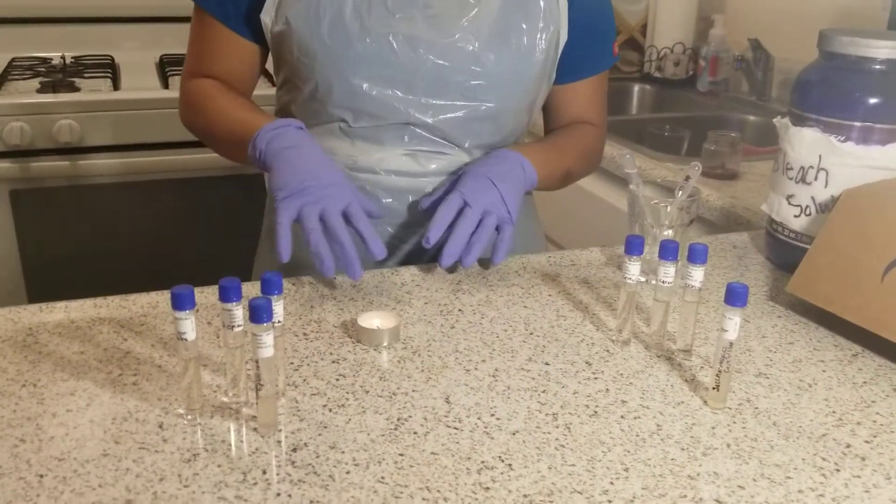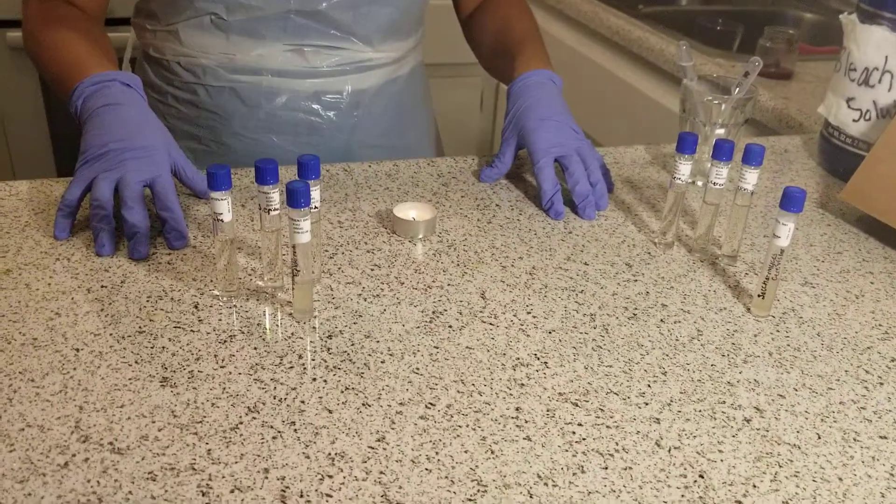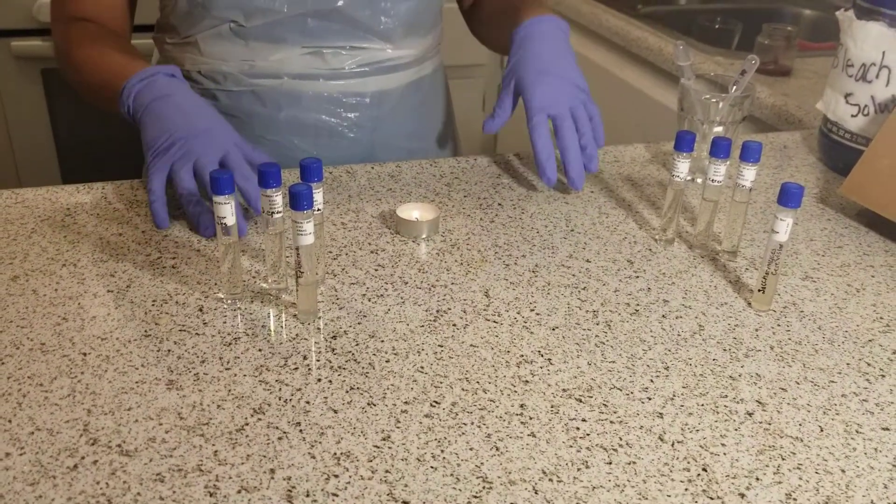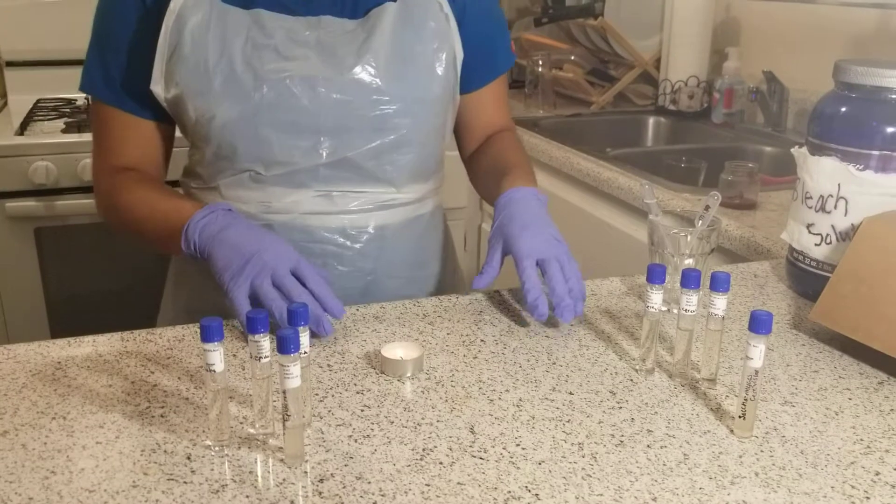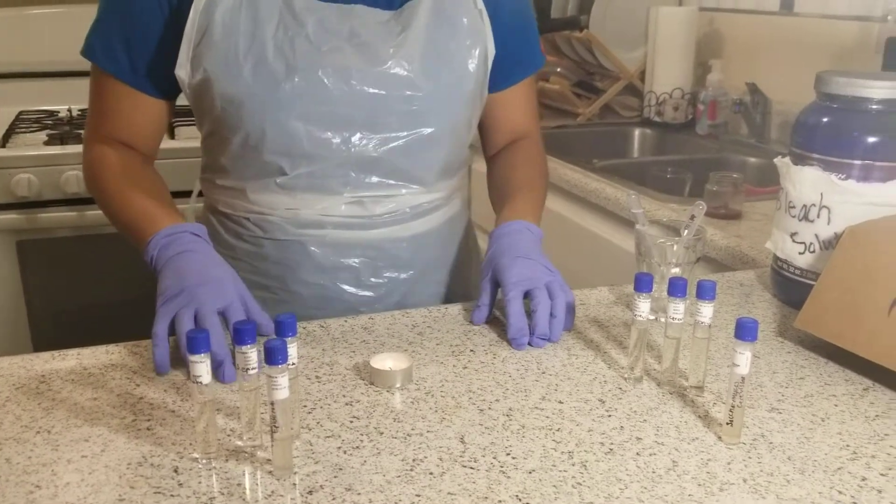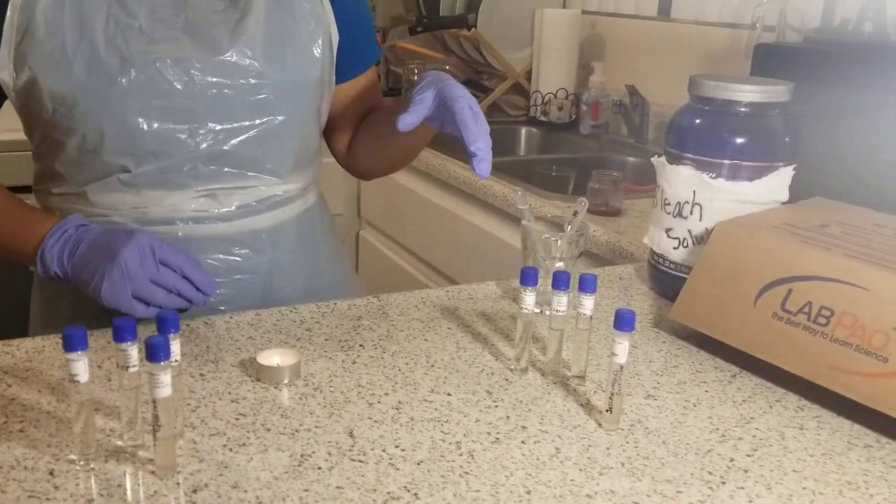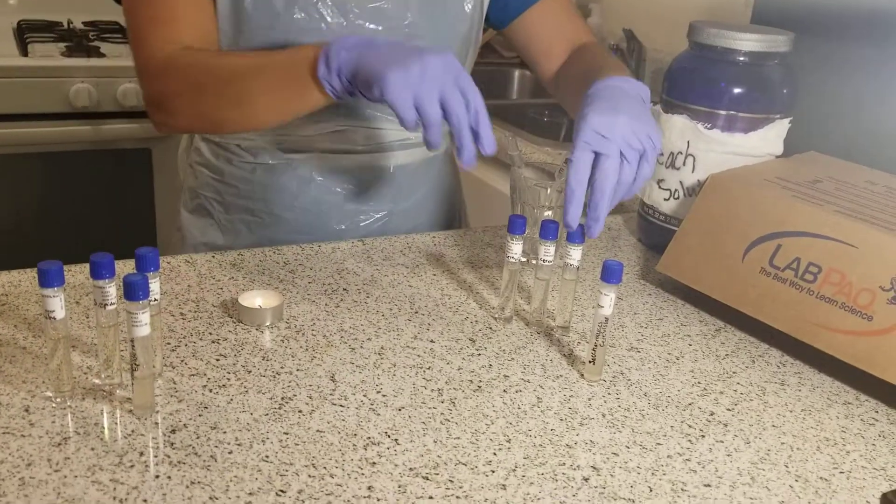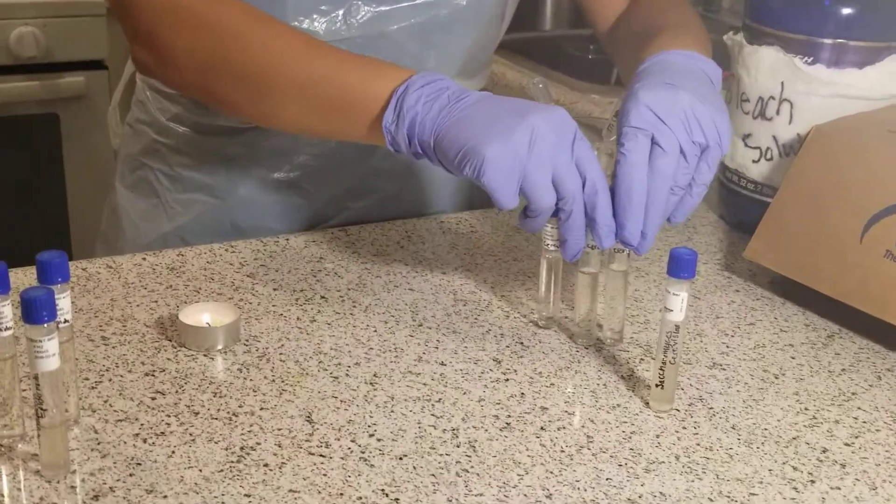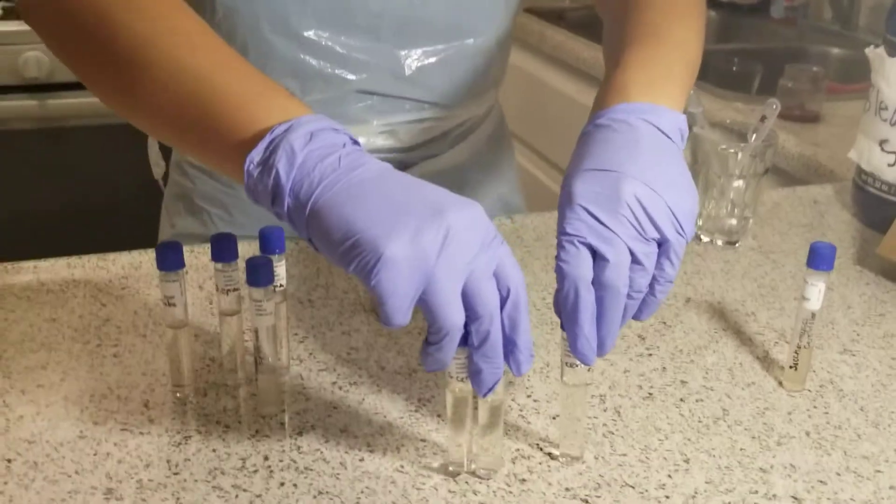I already cleared the work surface area and gathered all of my materials. I disinfected the area with 10% bleach solution. With the permanent marker, I labeled all of my sodium chloride tubes.